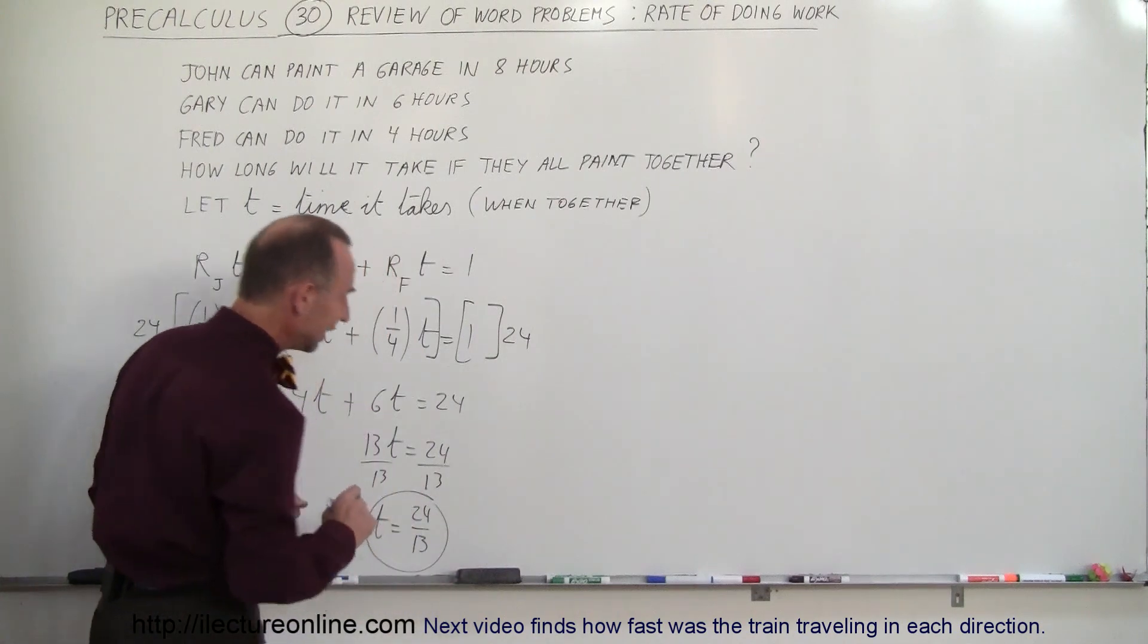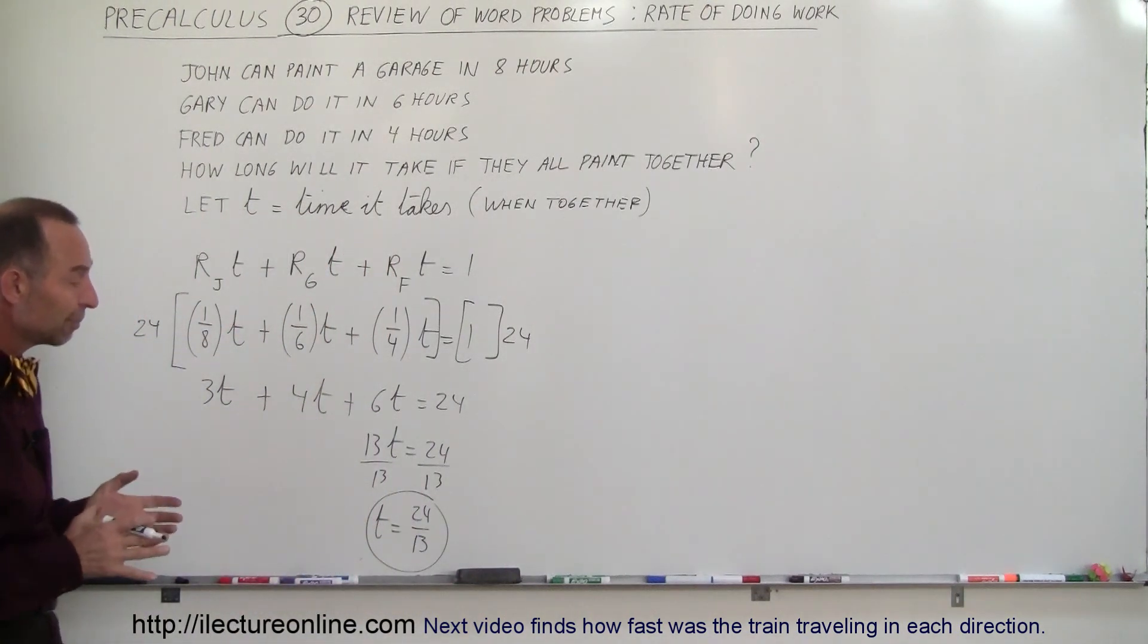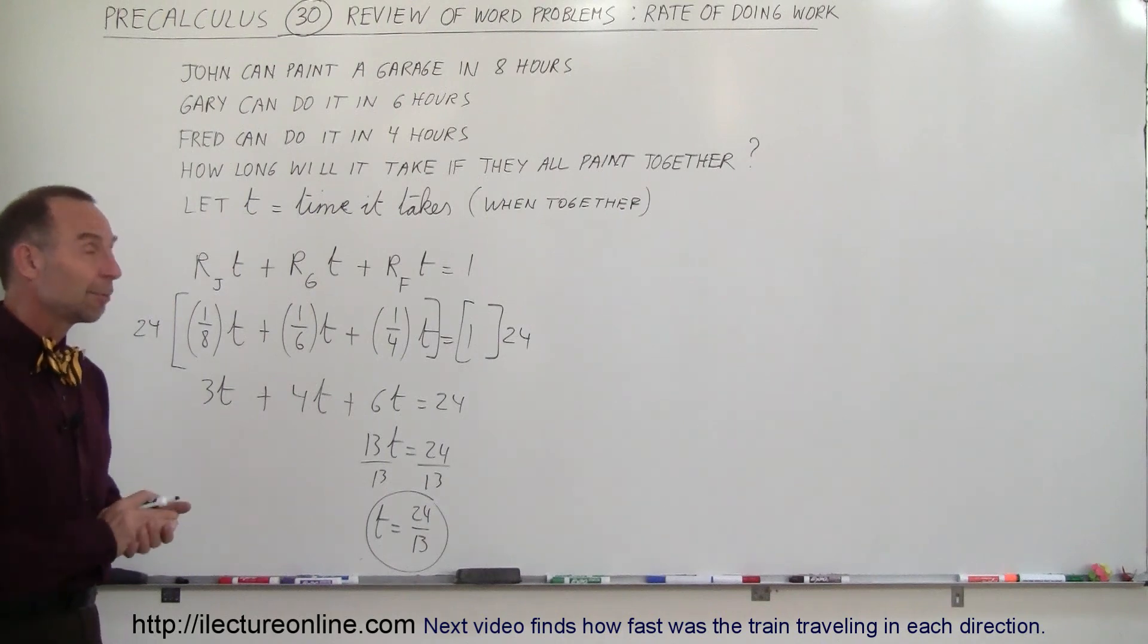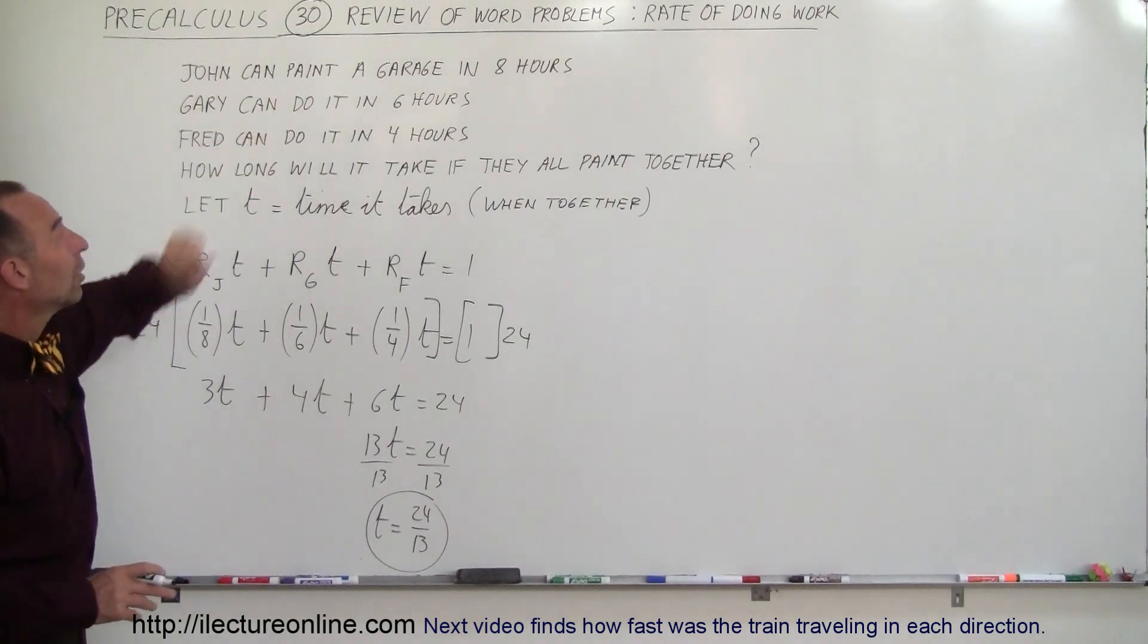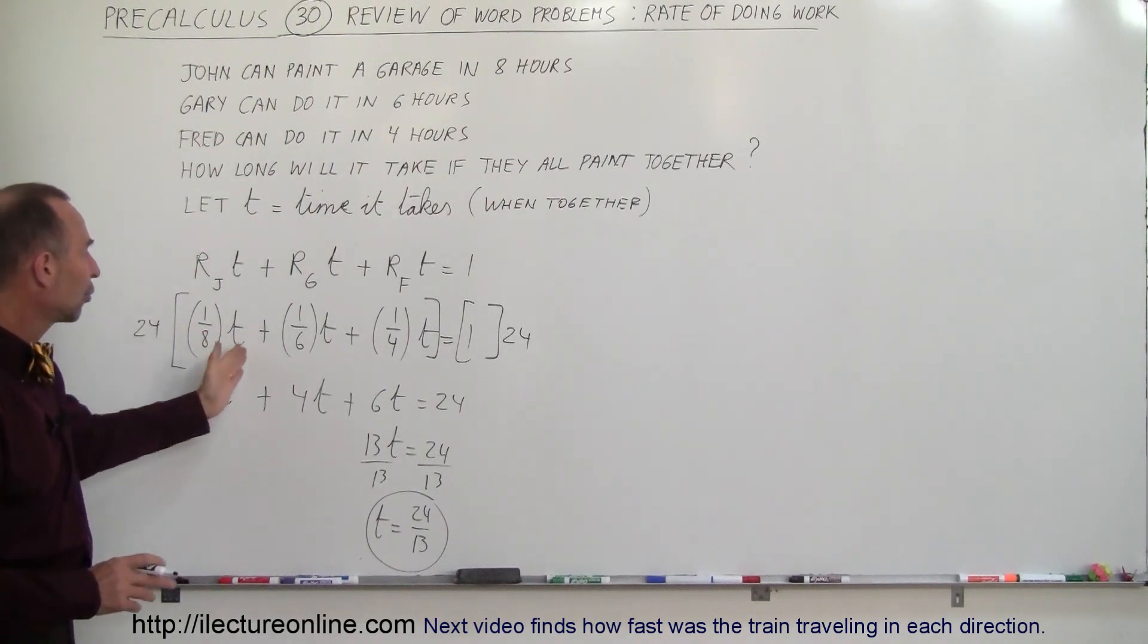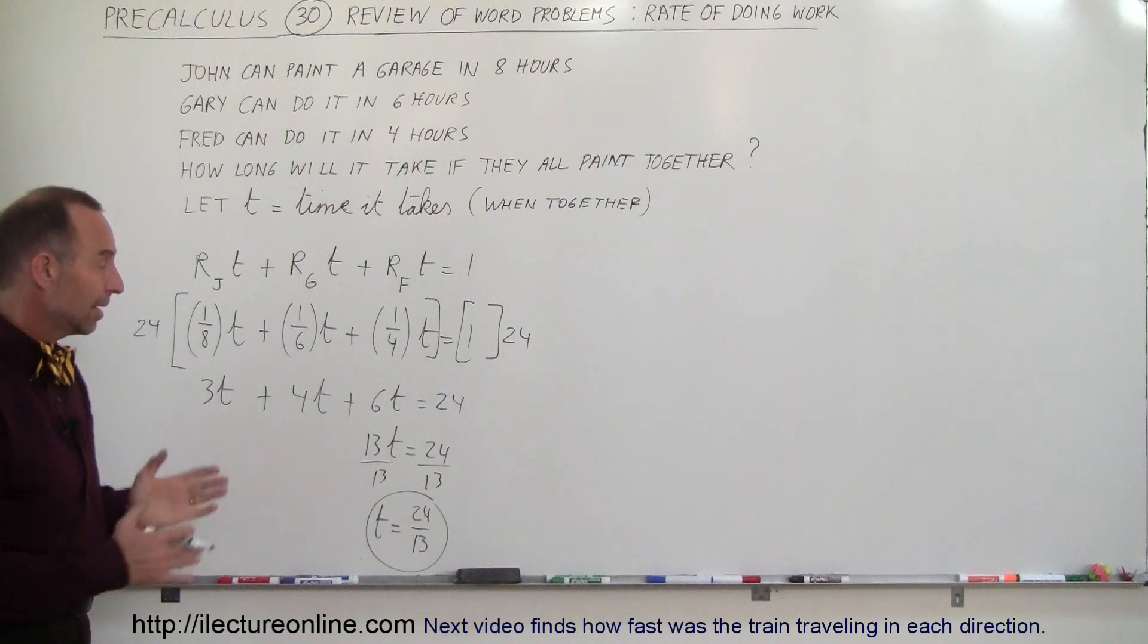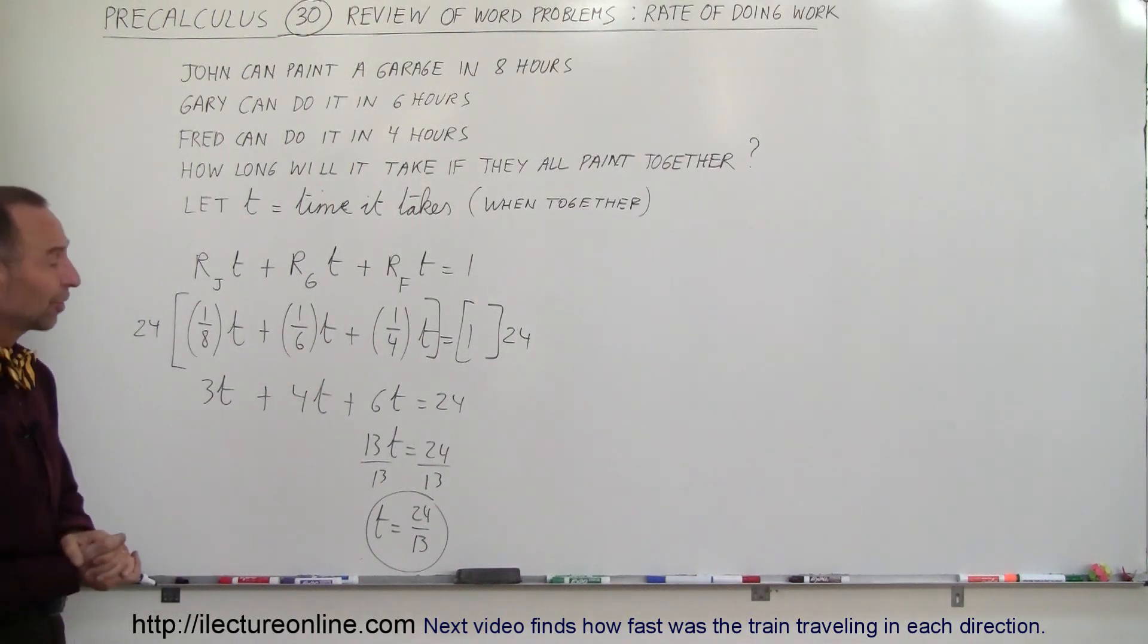Which is slightly less than two hours if all three of them paint together. And that's how we figure that out. Pretty slick, huh? So all we have to do is just find the rate by simply taking the inverse of how long it takes for them to do it, multiply times the total assumed time t, and then we get the total job done. And that's how we approach that.